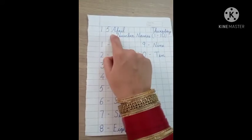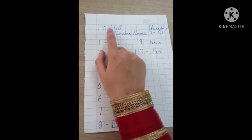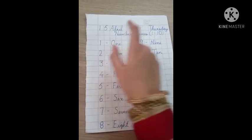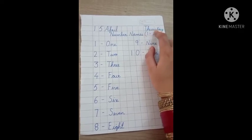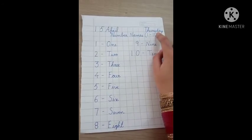So, sab se pehle, first of all, how we will do? On the left hand side, write the date. 15 April. A-P-R-I-L April. 15 April. On the right hand side, write the day. T-H-U-R-S-D-A-Y Thursday. Left hand side, date. Right hand side, day.